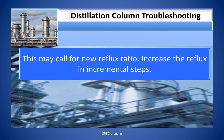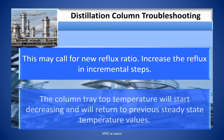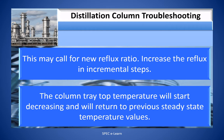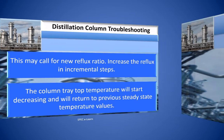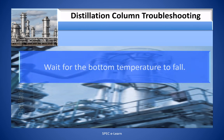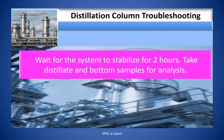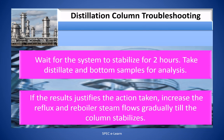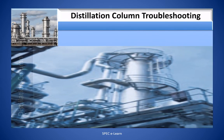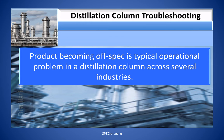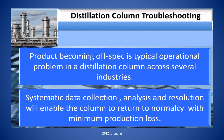This may call for a new reflux ratio. Increase the reflux in incremental steps — the column tray temperatures will start decreasing and return to previously established values. Wait for the bottom temperature to fall, then increase the steam flow in incremental steps. Wait for the system to stabilize for two hours, then take distillate and bottom samples for analysis. If results justify the action taken, increase the reflux and reboiler steam flows gradually until the column stabilizes. Product becoming off-spec is a typical operational problem. Systematic data collection, analysis, and resolution will enable the column to return to normalcy with minimum production loss.